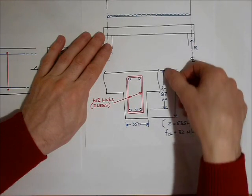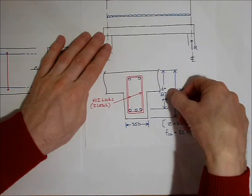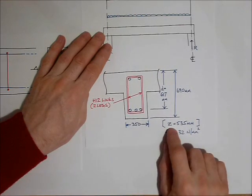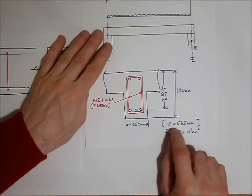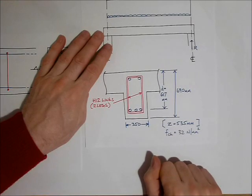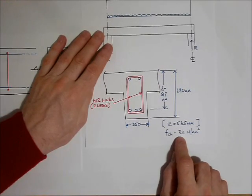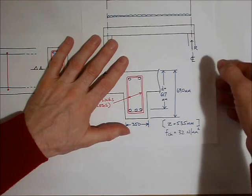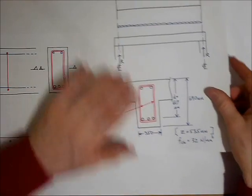We found out earlier that its effective depth D is 619mm and also Z, the lever arm of the beam, was 535mm. The strength of the concrete is 32N/mm². Great, that's a good start.